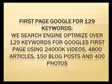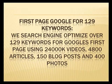We also include the first page of Google for 129 keywords. We search engine optimize over 129 keywords for Google's first page using 24,000 videos, 4,800 articles, 150 blog posts, and 400 photos.